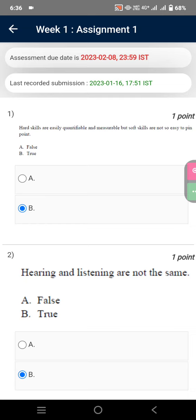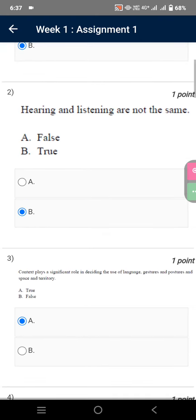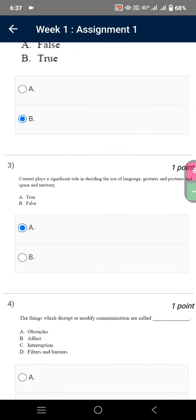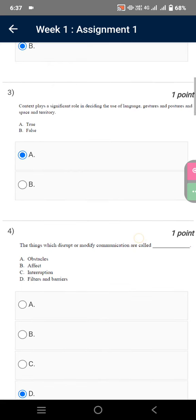So without taking much time, we are moving towards the very first question. Hard skills are easily quantifiable and measurable but soft skills are not easy to pinpoint - True. Hearing and listening are not the same - True. Context plays a significant role in deciding the use of language, gestures, postures, and space - True.